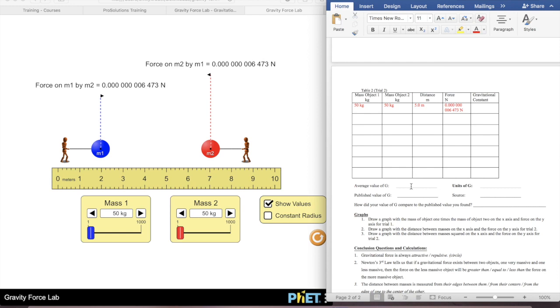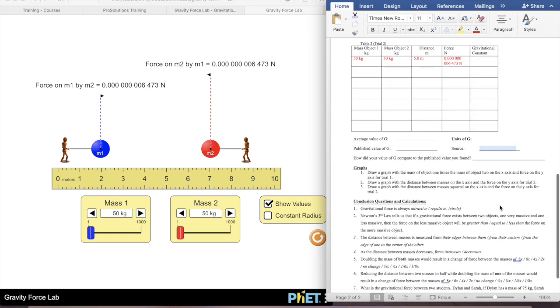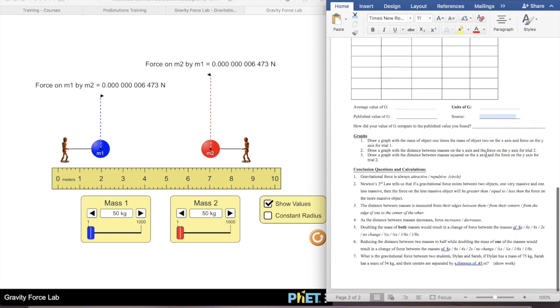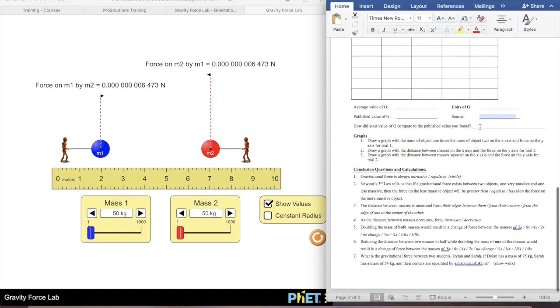Then you'll type in your average value of G, whatever you found, the published value of G, so you can look that up, it's in the PowerPoint, it's in the presentation, it's all over the place. The units of G, and then the source you've got for your, the source of your published value of G, and the units of G. So if you got it in the course homepage, you can just write course homepage. And then you can write your value of G. How does your value of G compare to the published value?